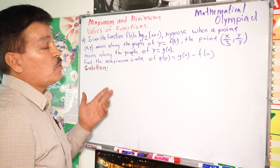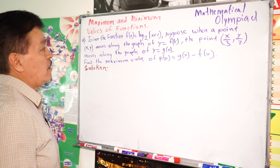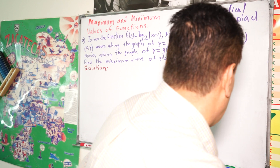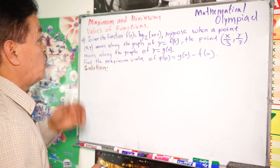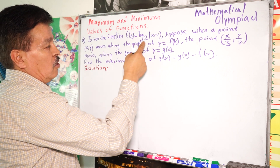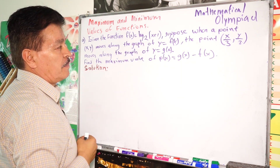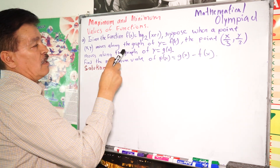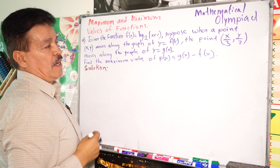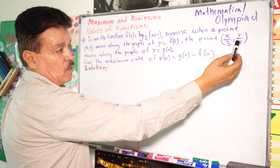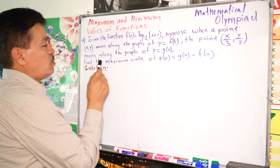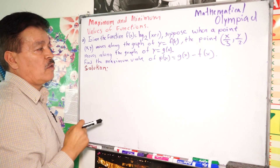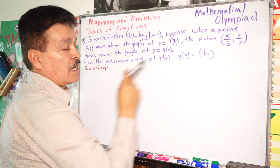Today we are going to talk about maximum and minimum values of a function. To learn that, we are going to solve one problem. Given the function f(x) = log₂(x + 1), suppose when a point (x, y) moves along the graph of y = f(x), the point (x/3, y/2) moves along the graph of y = g(x). Find the maximum value of p(x) = g(x) - f(x).